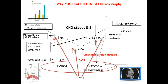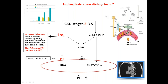So let's start with the first question: is phosphate a new dietary toxin? I think to some extent the answer is yes. As the world gets westernized, we are all eating processed food. There are many additives used, sometimes not even listed on food labels, and a lot of inorganic and organic phosphate is added to our food as additives. So we have far more phosphate intake than freshly cooked food would give us. We have also realized that our phosphate intake overtakes the excretory power of the kidney for phosphate as early as CKD stage 2 and 3.